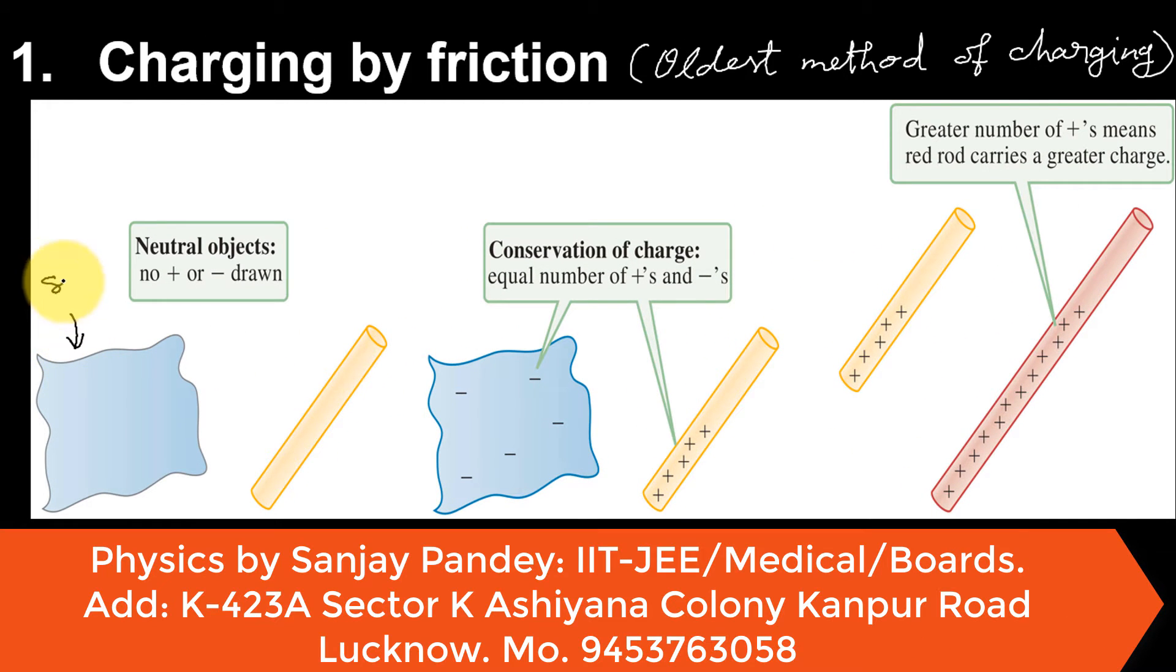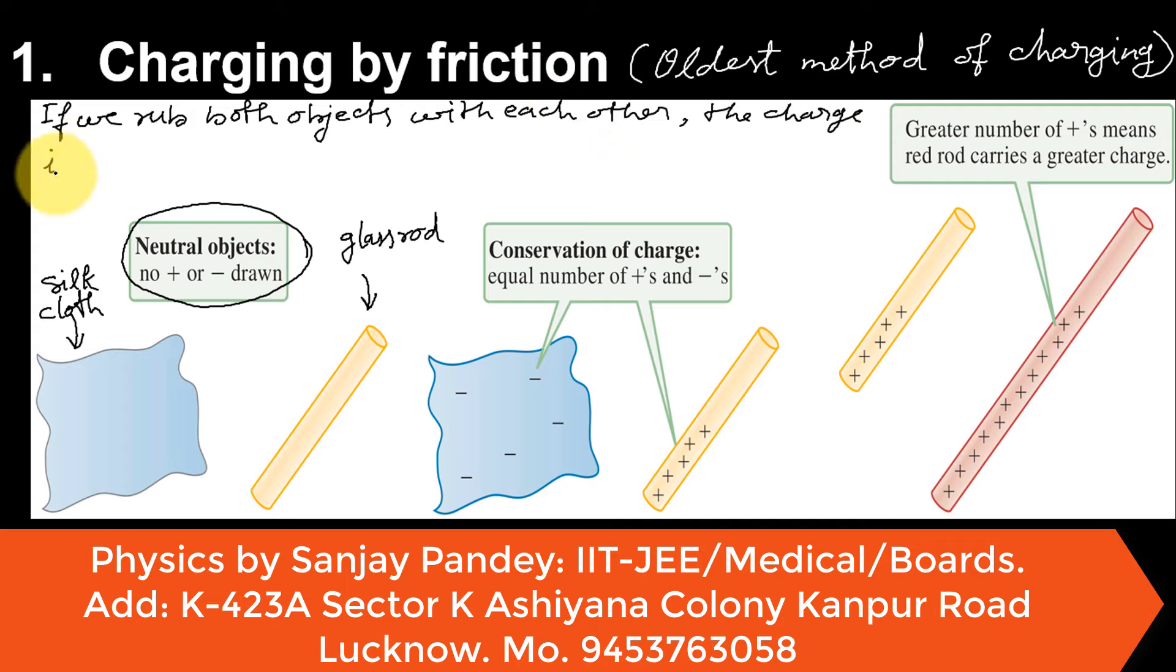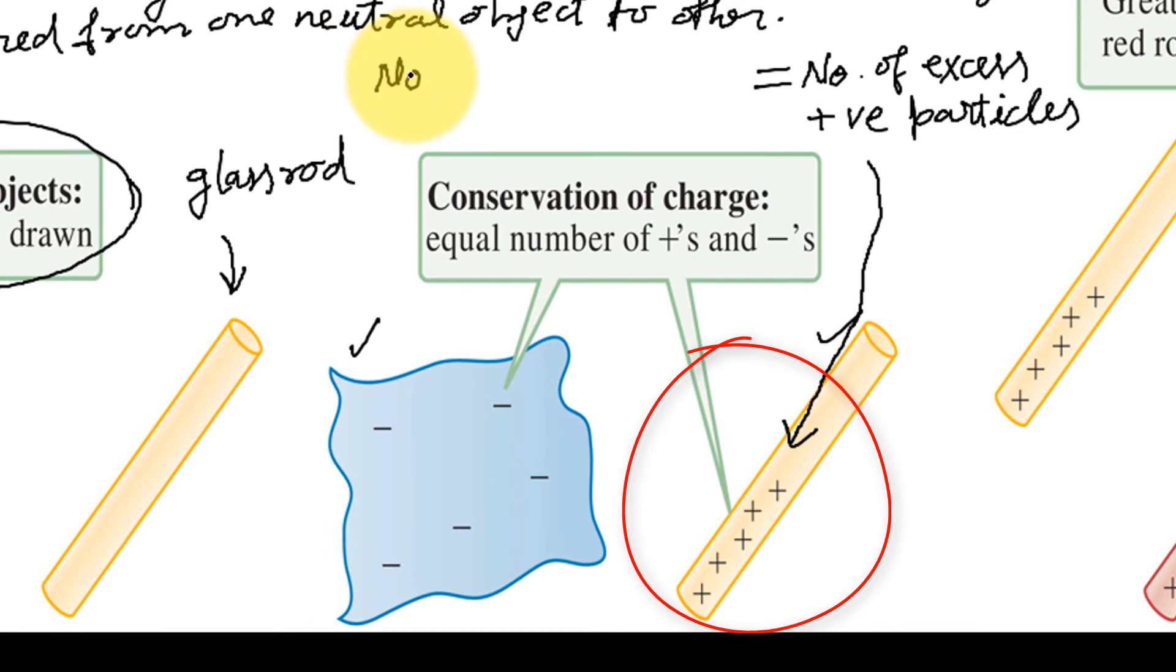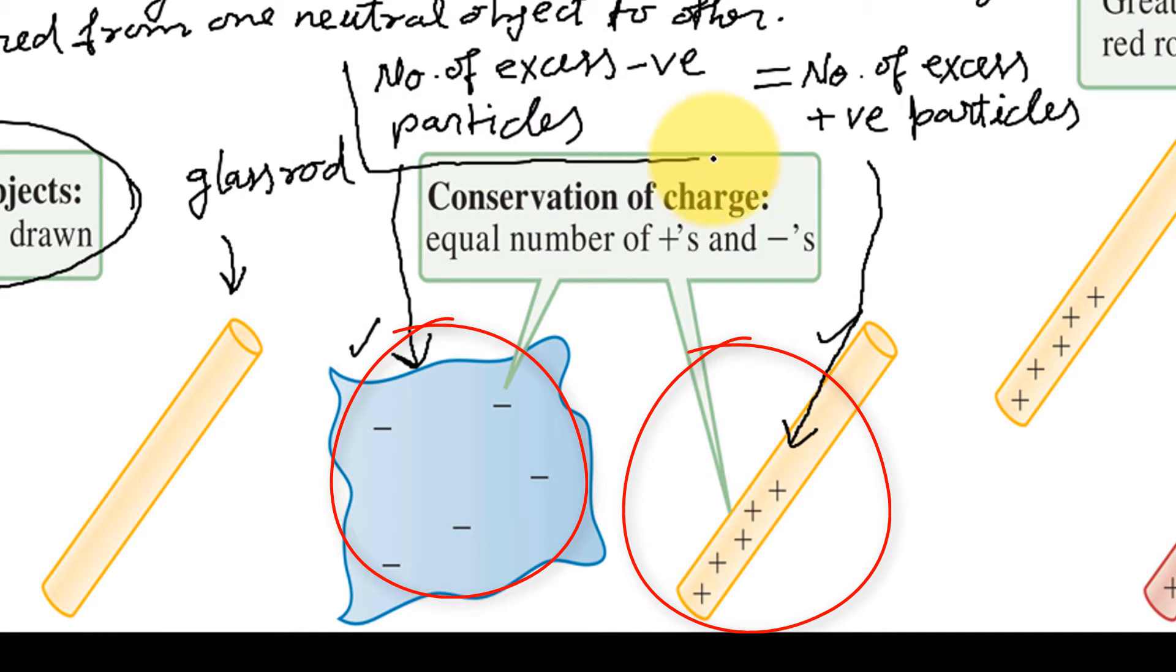The bodies retain their excess charges even when they are separated from each other. Here in this picture, I have two objects: silk cloth and glass rod. Initially both are neutral. Now if we rub both objects with each other, the charge is transferred from one neutral object to other. So both bodies become charged. The number of excess positive particles on one object must be equal to number of excess negative particles on the other object.